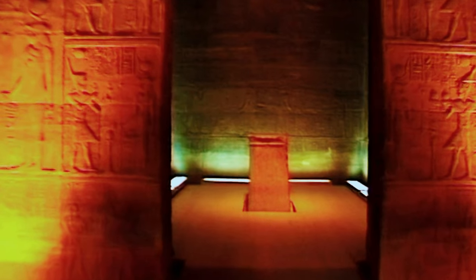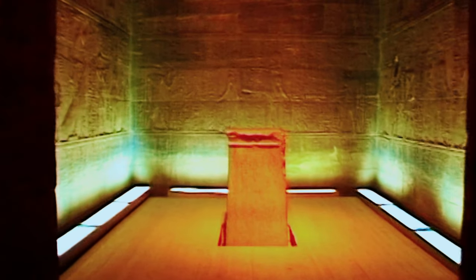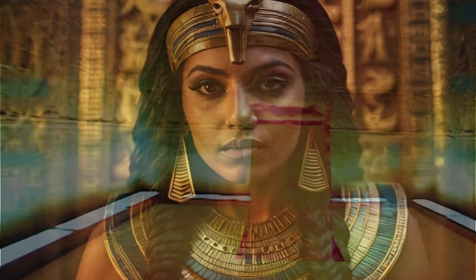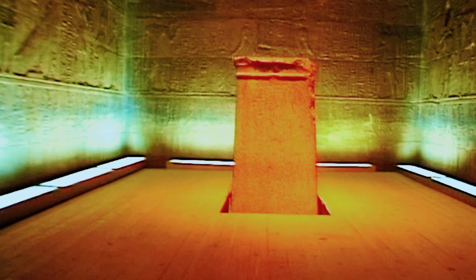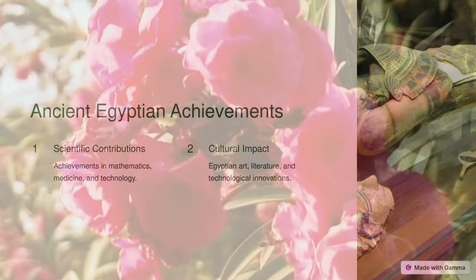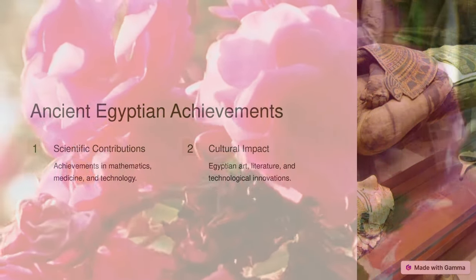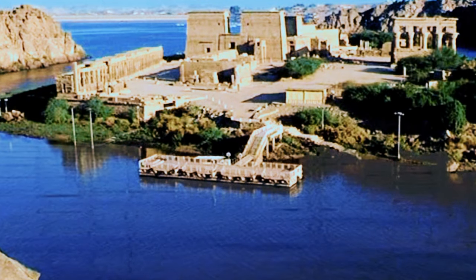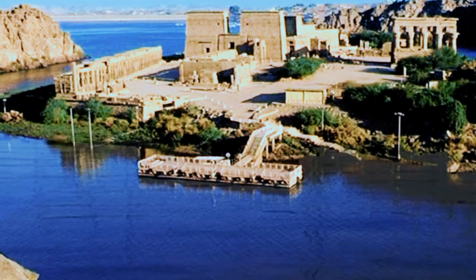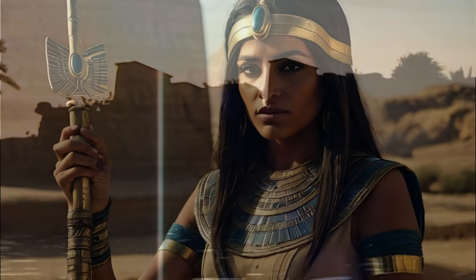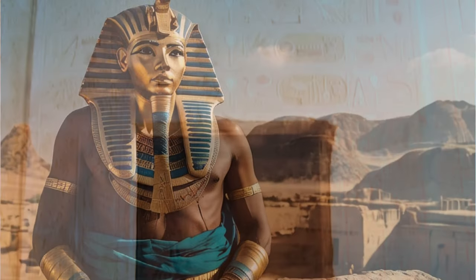Egypt remained under Rome and the successor Byzantine Empire until the 640s AD, when it was conquered by the Rashidun Caliphate. The success of ancient Egyptian civilization came partly from its ability to adapt to the conditions of the Nile River Valley for agriculture. The predictable flooding and controlled irrigation of the fertile valley produced surplus crops, which supported a more dense population and social development and culture. With resources to spare, the administration sponsored mineral exploitation, the early development of an independent writing system, collective construction and agricultural projects, trade with surrounding regions, and a military. Motivating these activities was a bureaucracy of elite scribes, religious leaders, and administrators under the control of a pharaoh.